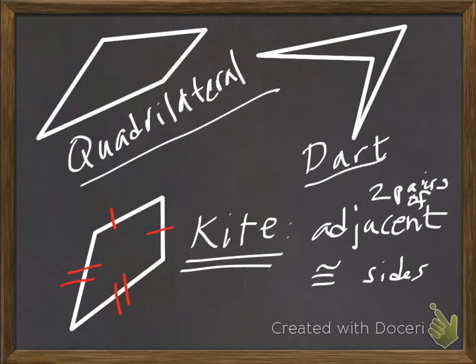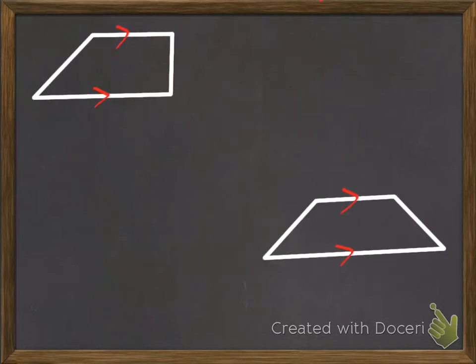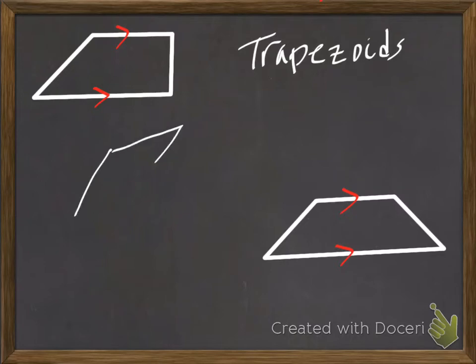Here are three somewhat unusual quadrilaterals, which naturally brings us to the more usual cases. Here we have a family of shapes called the trapezoids. In British English they call these trapeziums, but trapezoids is what we call them on this side of the Atlantic.